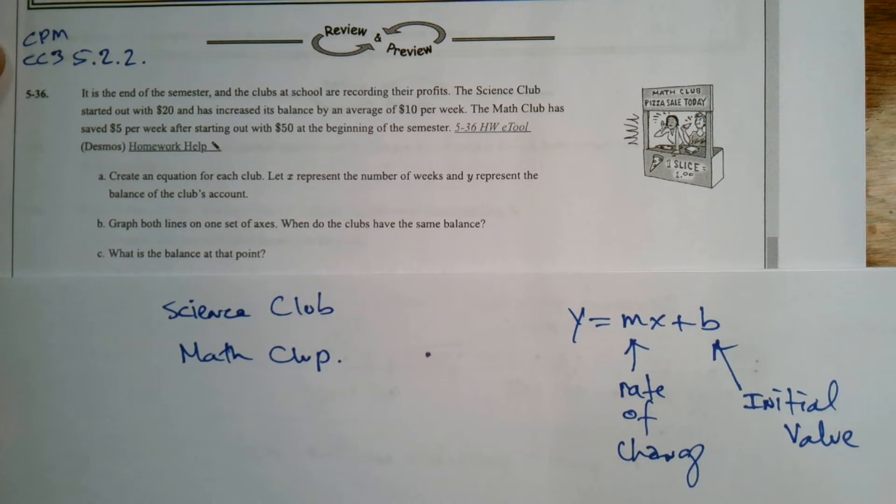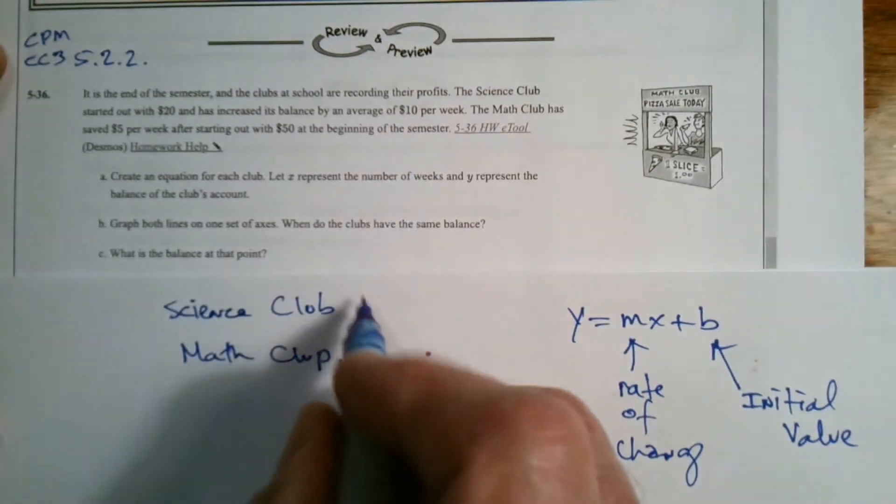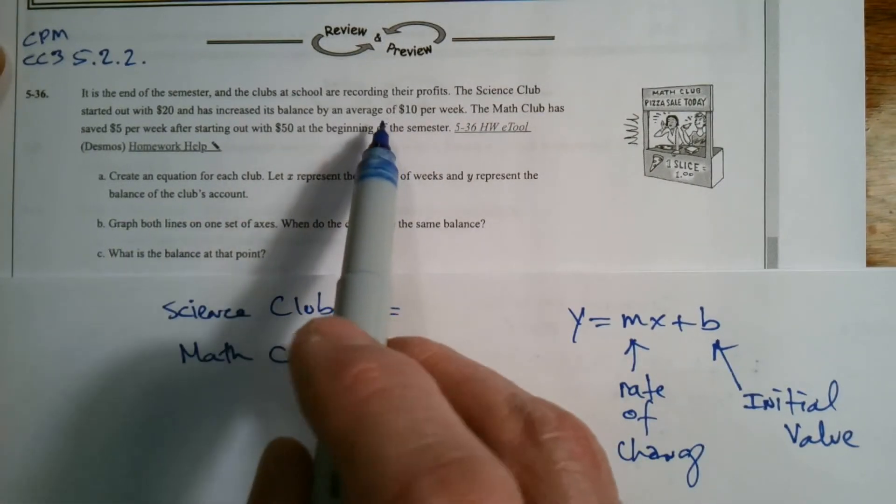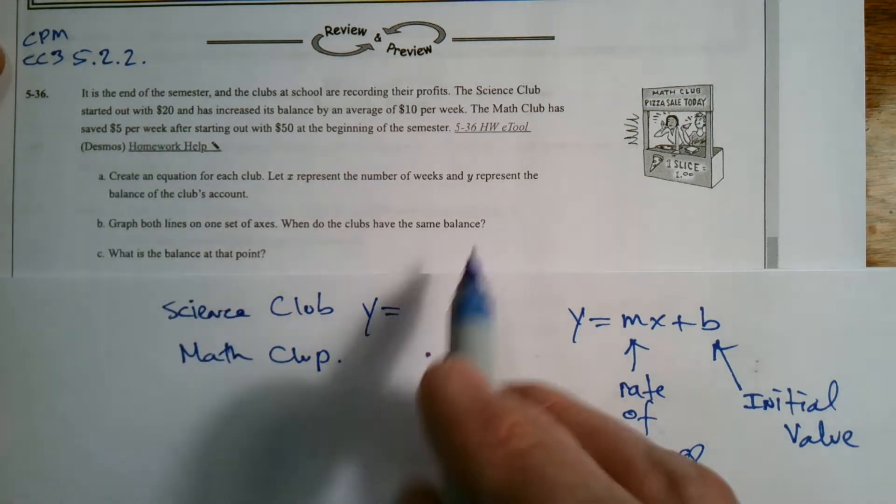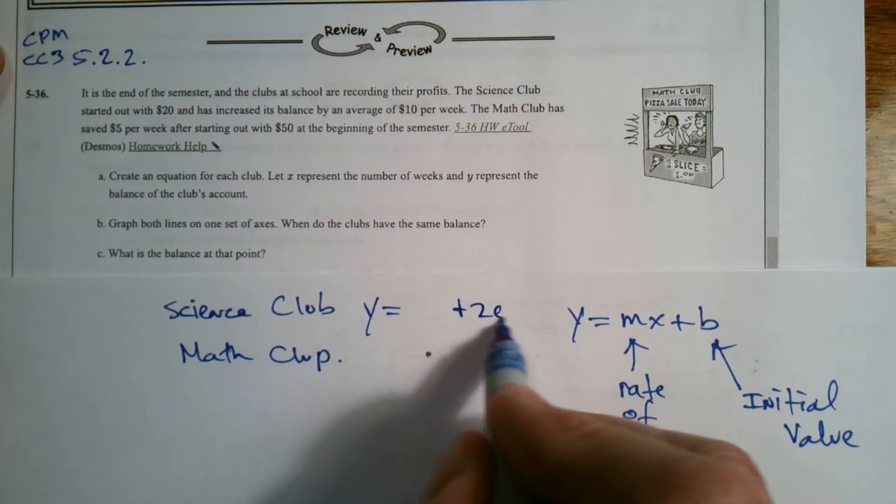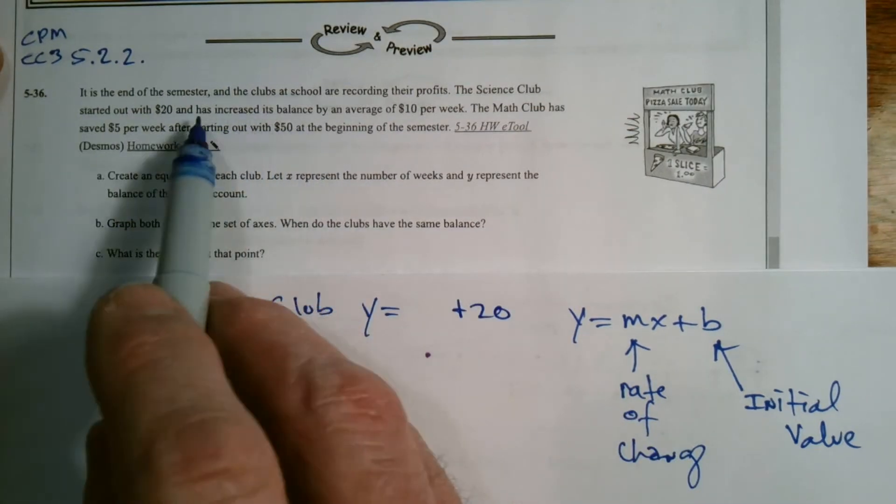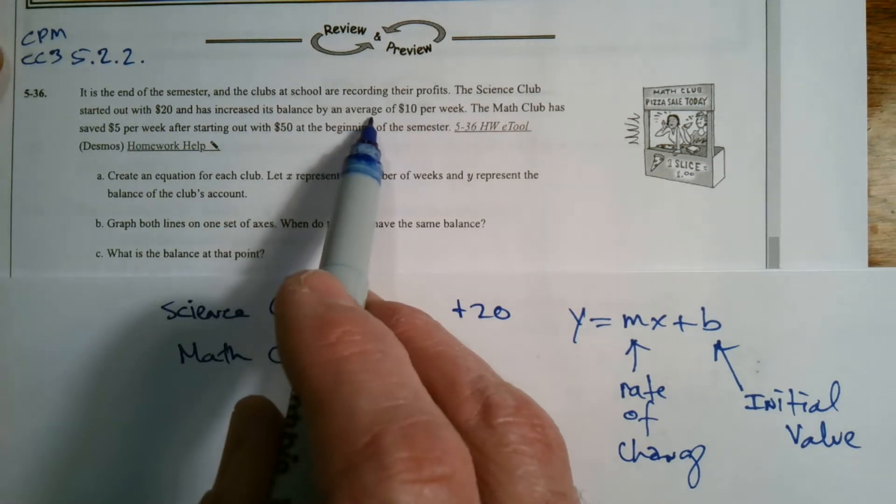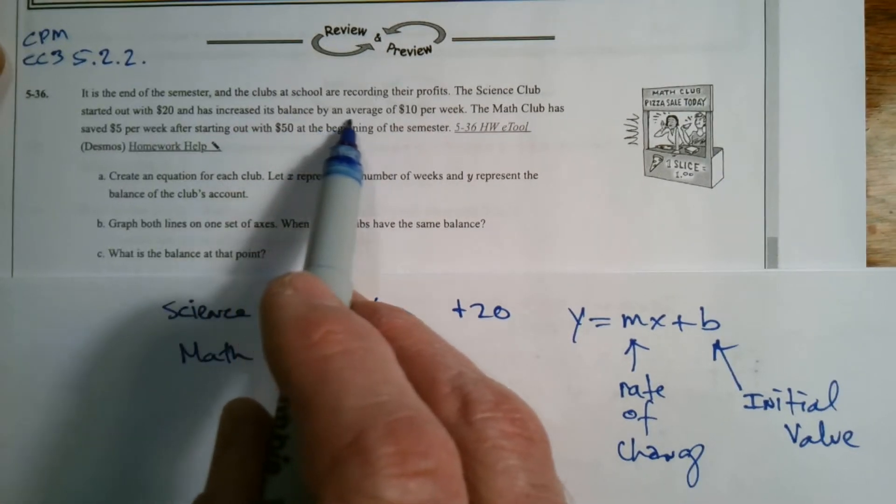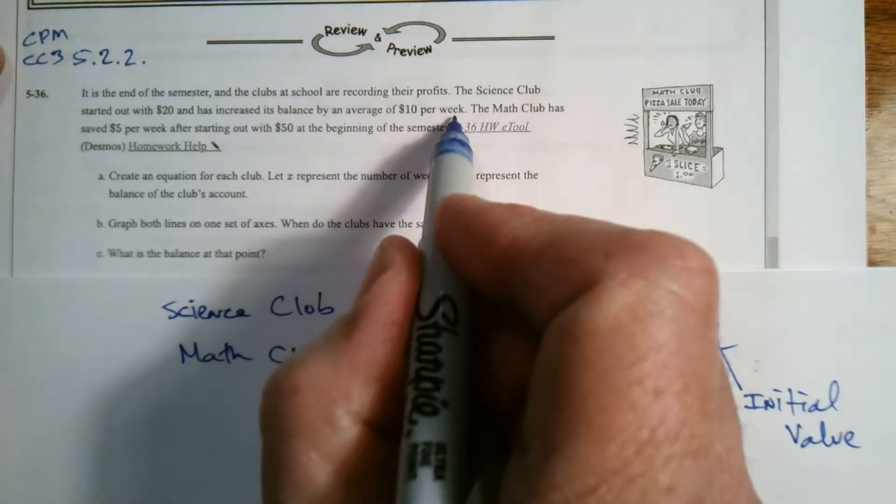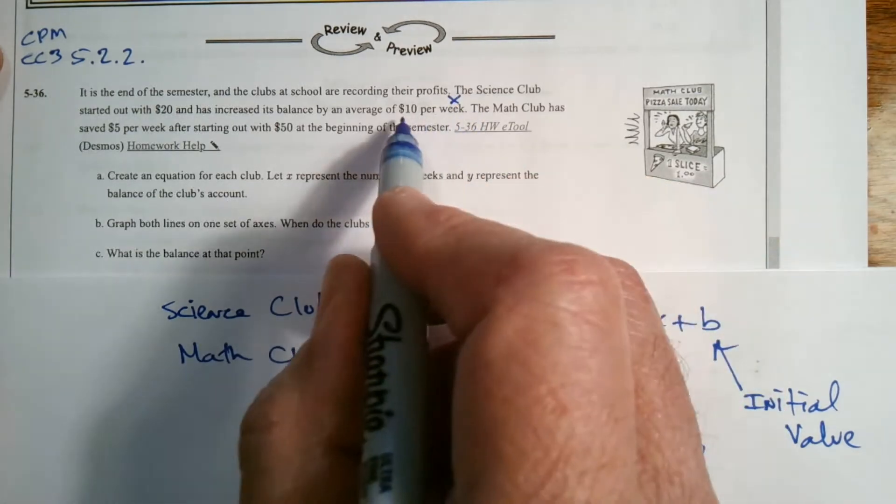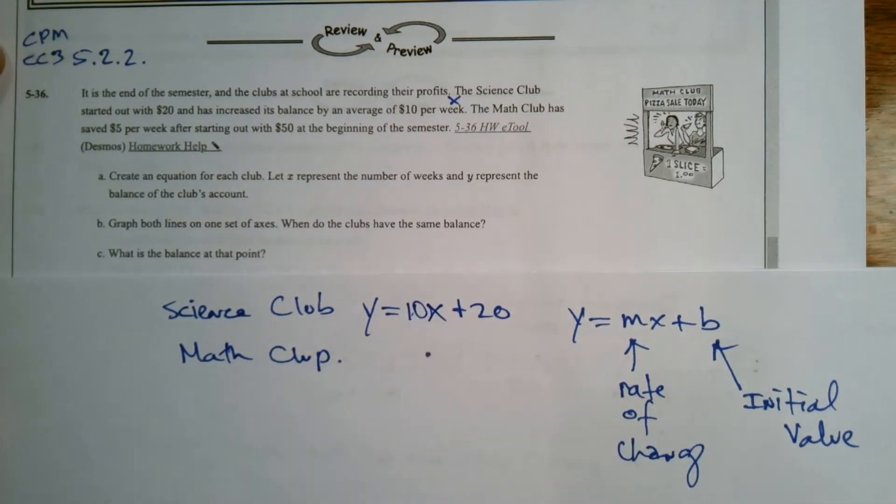So Y equals what for the Science Club? We know that their initial value was $20, so it's going to be plus 20. We have that as the initial value. And then it says it's increasing at an average rate, the balance is increasing on an average of $10 per week. There's your rate, $10 per week. Remember, week was X. So we know that's my X value, $10 per week. So it's 10X. That's the equation that works for Science Club.